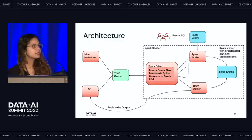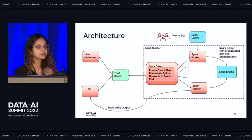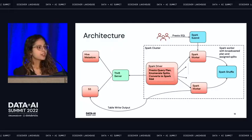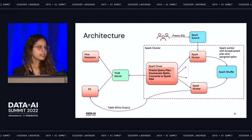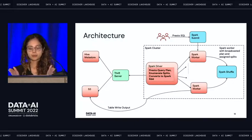As you observe, Presto on Spark does not use any Spark capabilities like the Spark planner or Spark optimizer — it operates at the RDD level. It does not use Spark APIs to communicate with S3, Hadoop, or other data sources. It's all the Presto evaluation library executing on the driver and within Spark tasks.